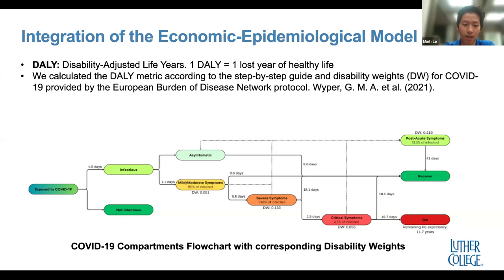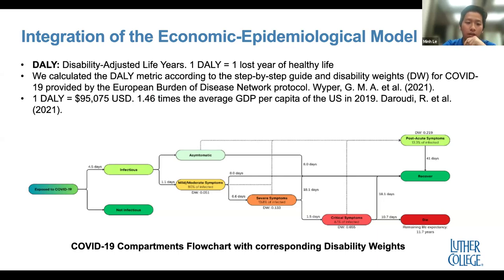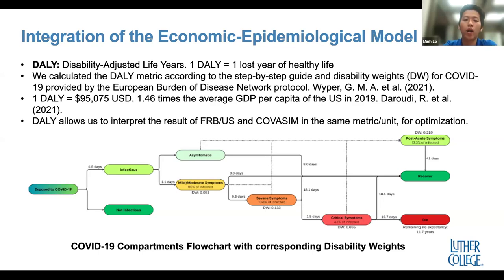We calculate the DALY metric using the step-by-step guide and disability weights for COVID-19 provided by the European Disease Network Protocol. Basically, for a certain state of disease, there is a disability weight associated with how debilitating that state is. We then convert one DALY to roughly $95,000 USD, which is approximately 1.46 times the average GDP per capita — the standard way to define the monetary value of a DALY. This allows us to convert the effect of the pandemic into USD, giving us the same metric as the economics model so we can perform optimization.